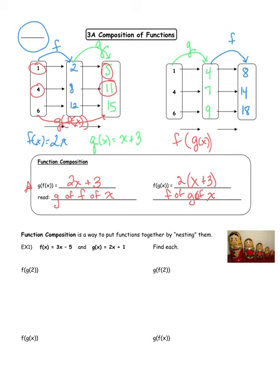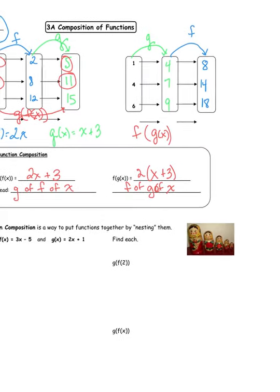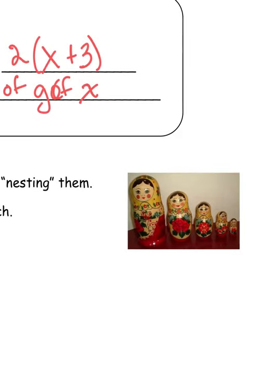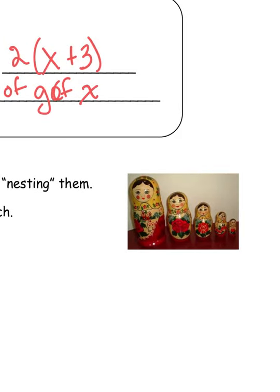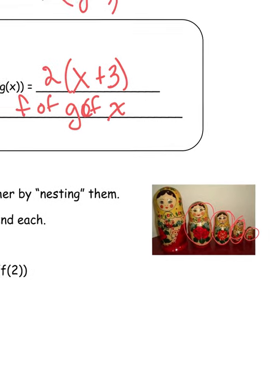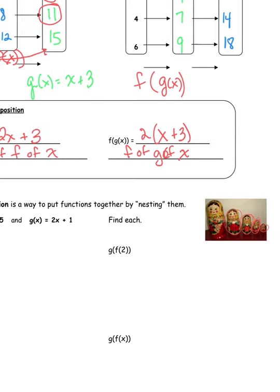Today we're looking at what we refer to as composition — sometimes I call that a nesting function, where you put one function inside the other. Off to the side here I have an example of nesting: Russian nesting dolls. This little doll fits inside this one, and that one fits inside this one. You're putting one doll inside another — those are called nesting dolls. And that's what these are: nesting functions.